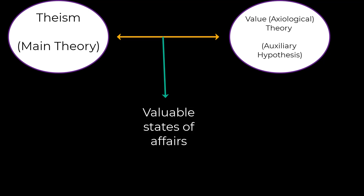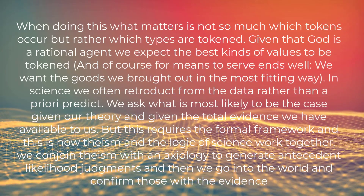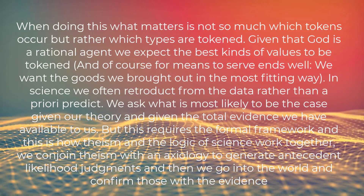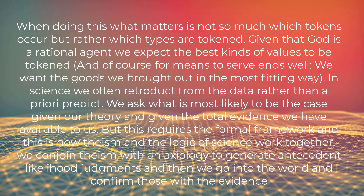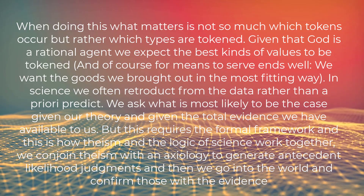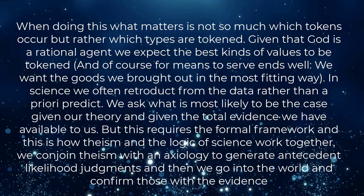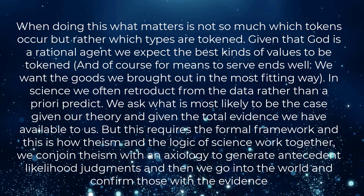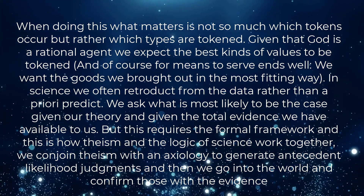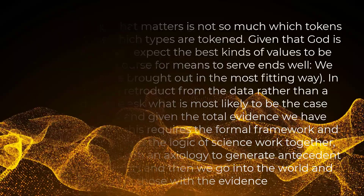Therefore, theistic confirmation and disconfirmation is only possible through conjoining theism with an axiological auxiliary hypothesis, and this applies to all abductive and Bayesian arguments for and against theism that use any notion of epistemic probability. Under theism, states of affairs are at the most general level expected to the extent that they are good and realize some kind of value — the higher the value, the higher the expectation. There will be a large number of ways of realizing the highest goods, and some goods whose compossibility in a world is not guaranteed, so no particular way of realizing them will have an antecedently high mathematical probability. But we are not trying to predict in advance which goods will be realized — we are retrodicting, asking what makes sense of what we take to be the case. In science we often retrodict from the data rather than predict a priori, asking what is most likely to be the case given our theory and total evidence. This is how theism and the logic of science work together: we can join theism with an axiology to generate antecedent likelihood judgments and then confirm those with the evidence.